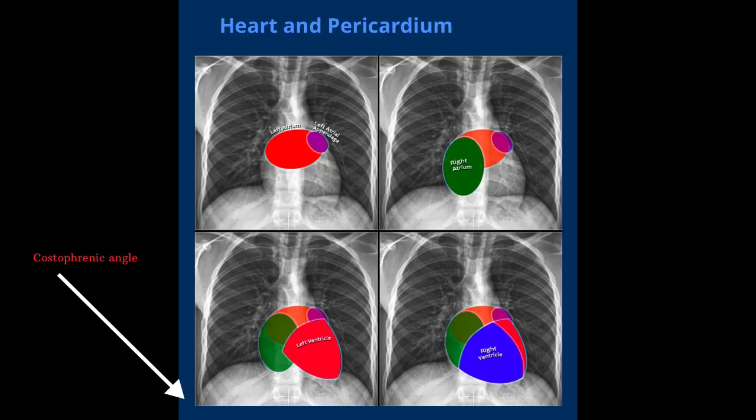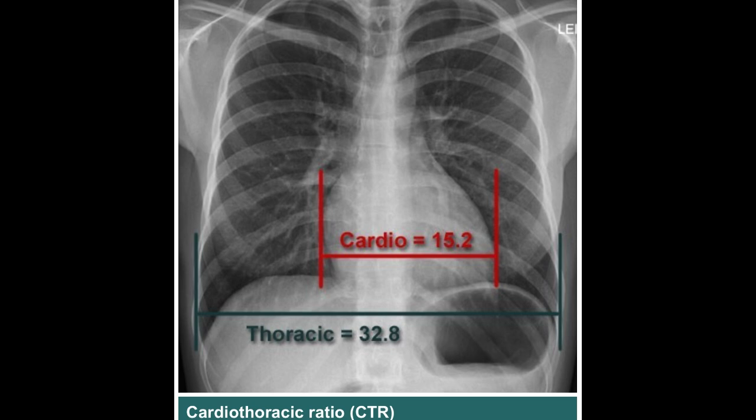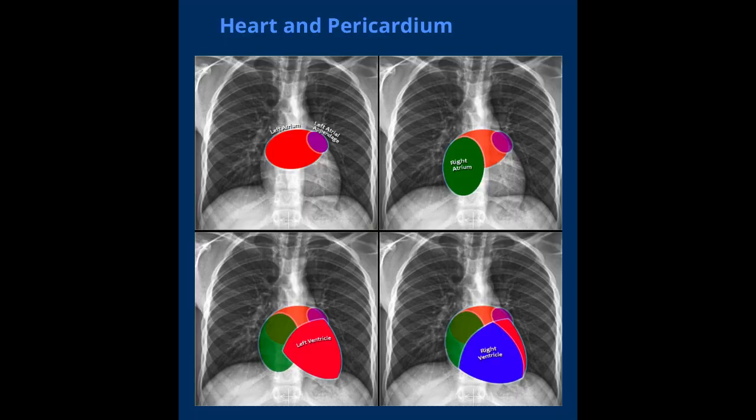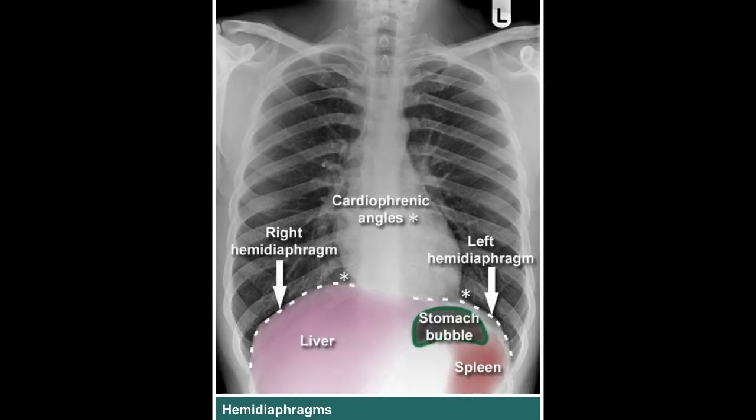For circulation: the heart size should be normal. The cardiothoracic ratio should be less than 50% on the posterior-anterior view. The borders of the heart should be well defined, and the aortic arch and pulmonary artery should be visible.